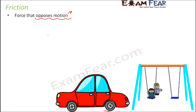Let us look at another example. Have you ever been to the children's play area and seen these kinds of swings? When you sit on the swing and somebody is pushing you from behind, once he applies some force, you keep swinging for some time and then you come to rest on your own, even if he is not applying any further force. So why do you stop? That's because of the frictional force of air. There is some kind of friction between air and the swing, and as a result, over a period of time, it comes to rest.